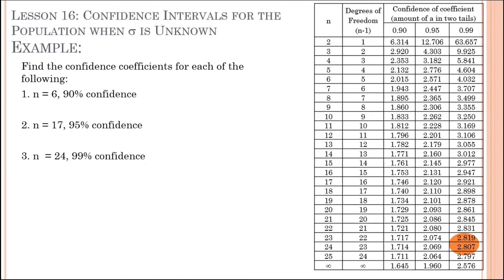Now let's practice finding the t-value. For number 1, if n equals 6 and the confidence interval is 90%, we find 6 in the first column, then 90% in the confidence columns. The intersection gives us a t-value of 2.015.